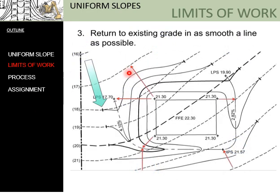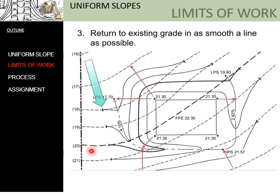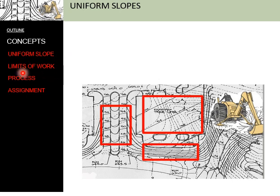The last portion of limit of work involves tick marks — we want our contour lines to come back so they are actually running in the same direction as the existing contours. Our proposed contour will curve until it runs parallel with the existing contour, and these tick marks then become a de facto limit of work. There's no reason to disturb any land beyond that, and you want to encourage your contractor not to store equipment in these areas, as it will also compact the earth. Uniform slope and limit of work are the two concepts covered in this lecture; the next lecture will cover the process using your assignment as an example.